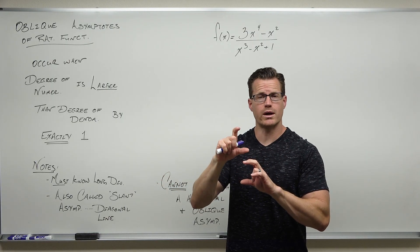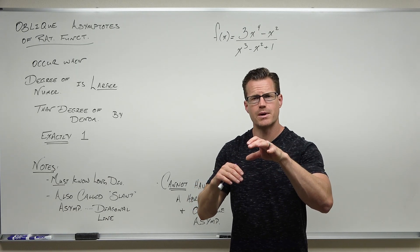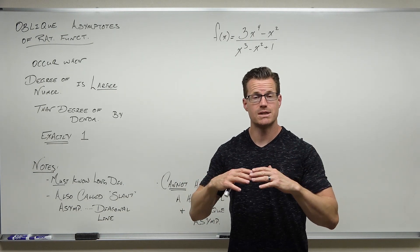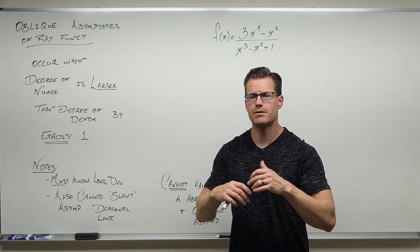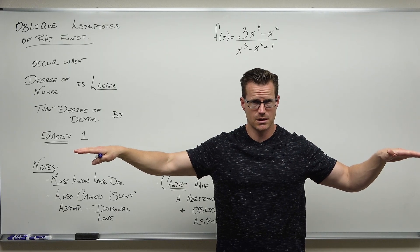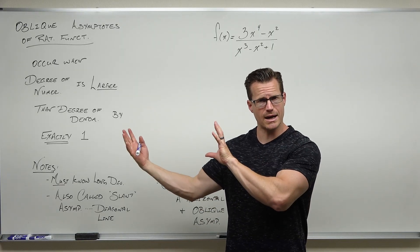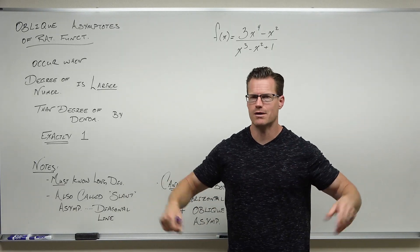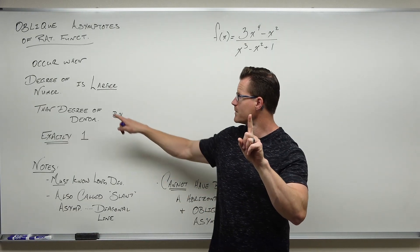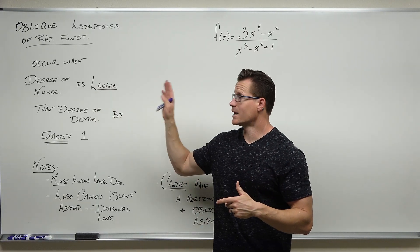So what happens when the numerator starts being larger? Horizontal asymptote takes care of all the cases where the denominator is equal to or greater than the numerator. The oblique asymptote and end behavior take care of the cases where the numerator's degree is bigger than the denominator. If the numerator is larger, we really only have two cases: the oblique asymptote, or just straight-up end behavior. The oblique occurs when the degree of the numerator is exactly one more than the denominator.